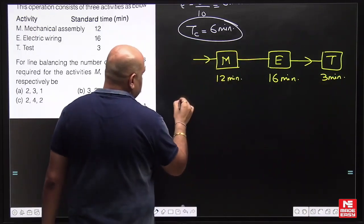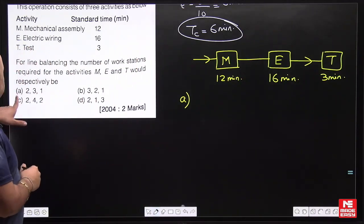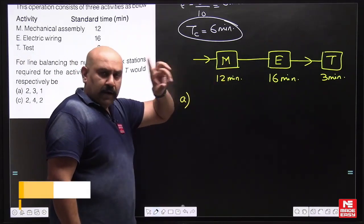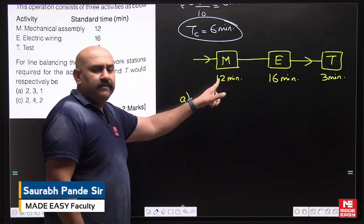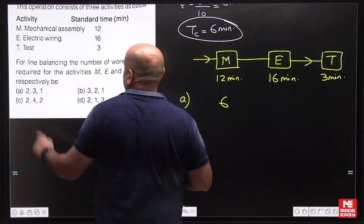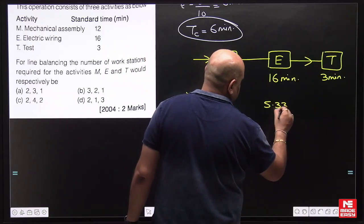Option A is 2, 3, 1. Now if we make two stations of mechanical assembly, two working simultaneously means half the time required, so 12 divided by 2 will be 6 minutes. Then 3 stations for electrical: 16 divided by 3 will be 5.33 minutes, and 1 for testing means 3 minutes.